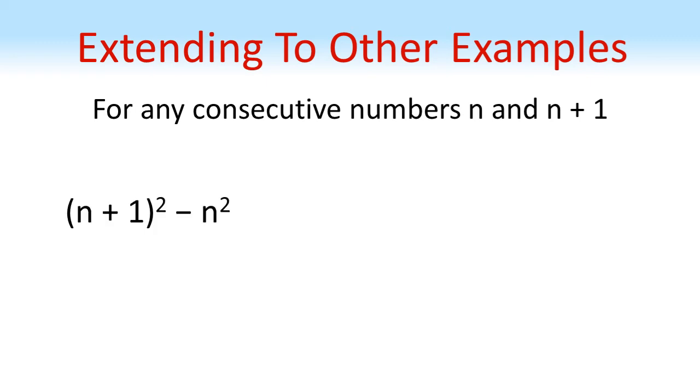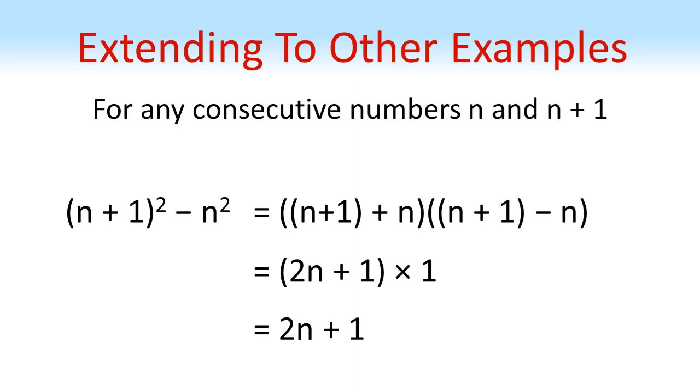Putting these into our formula n plus 1 squared minus n squared, we get our two pairs of brackets. Simplifying this down gives us 2n plus 1.